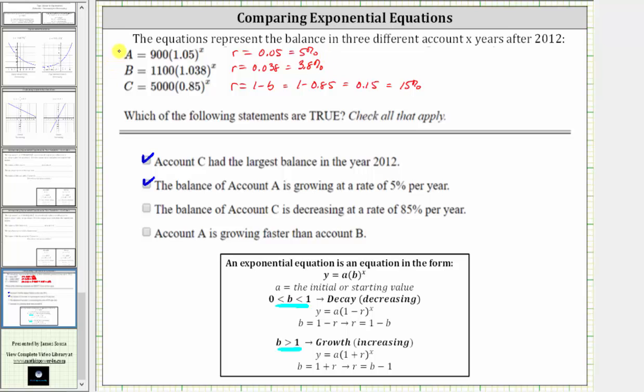So account A is growing at a rate of 5% per year. Account B is growing at a rate of 3.8% per year. And therefore account A is growing faster than account B is true. Three of these four statements are true based upon the given equations. I hope you found this helpful.